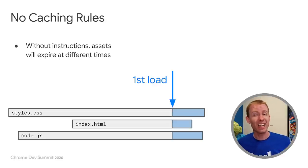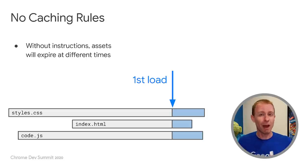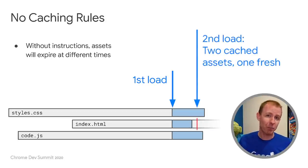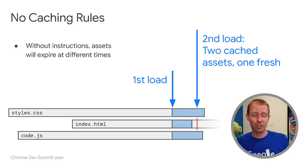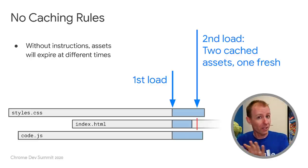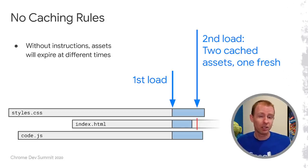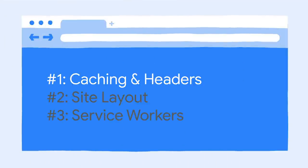This becomes a real problem when you have lots of assets created at different times. When you do your first load and they come back with different Last-Modified headers, these assets will be cached for different amounts of time. So on the second load, you might actually be getting a cached version of some files but not others. And even more confusingly, different browsers implement this differently — some will always fetch the HTML assuming it's always out of date, but might skip the CSS and JavaScript. Having no rules may have been fine in the 90s, but this ambiguity is dangerous for today's modern web.